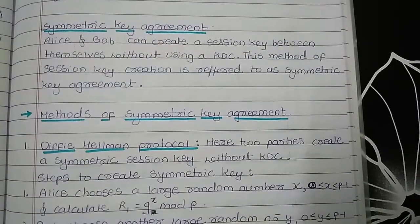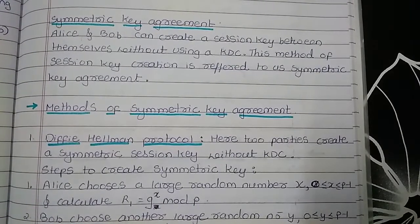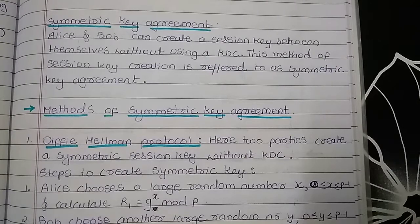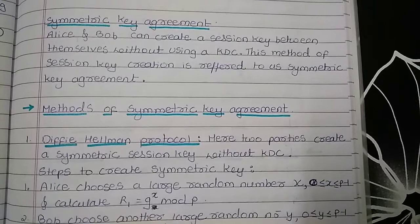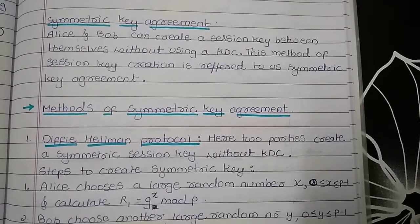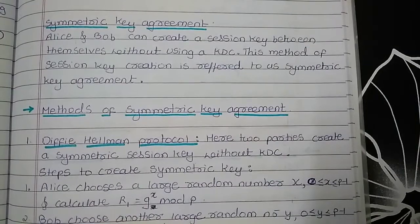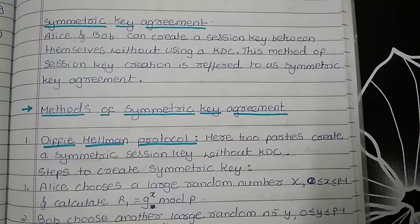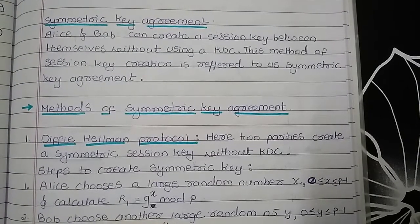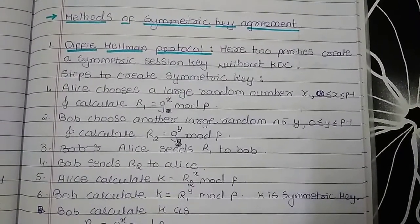Hello everyone. Now we will see the concept of symmetric key agreement. Symmetric key is nothing but the common key shared between both sender and receiver so that they can send and receive messages. Here we are assuming that Alice is the sender and Bob is the receiver. Both can create a session key between themselves without using the KDC — key distribution center. This method of creating the session key without using KDC is referred to as symmetric key agreement. Now let us see what are the different methods which we can use to create the symmetric key.